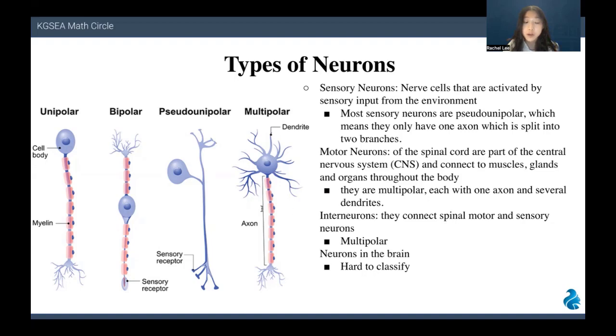Motor neurons of the spinal cord are part of the central nervous system and connect to the muscles, glands, and organs throughout the body. These neurons transmit impulses from the spinal cord to skeletal and smooth muscles, and so directly control all of our muscle movements. As the name suggests, interneurons are the ones in between. They connect spinal motor and sensory neurons. As well as transferring signals between sensory and motor neurons, interneurons can also communicate with each other, forming circuits of various complexity. They are multipolar, just like motor neurons.